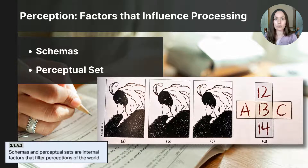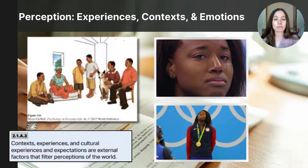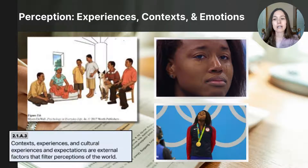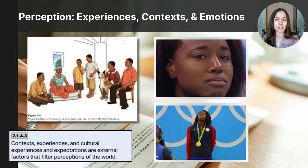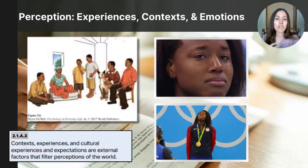Perception can also be influenced by our experience, context, and emotions. In 1973, a study by Gregory and Gombrich showed how people interpreted the same visual image differently based on their cultural backgrounds. Participants from West Africa were more likely to perceive it as a family sitting outdoors under a tree, with a woman balancing a metal box on her head. Whereas participants from Western cultures were more likely to perceive the family sitting indoors with a window just above the woman's head. Cultural background influenced how they perceived the same image.